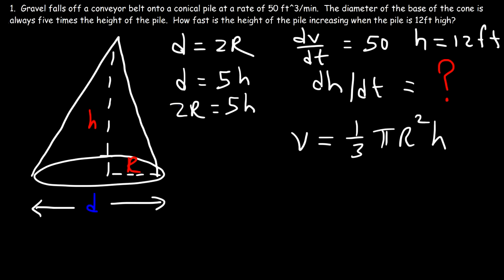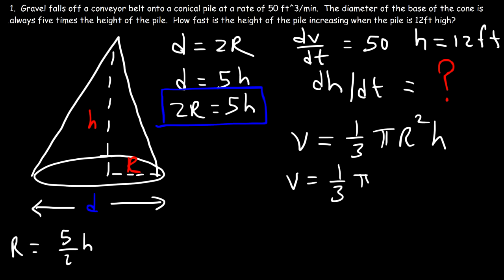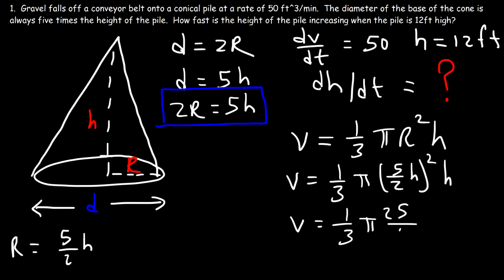We have an equation relating r with H. Solving for r by dividing both sides of 2r equals 5H by 2 gives r equals five-halves times H. Now let's replace r with (5/2)H in the volume formula. Five squared is 25, two squared is four, and H squared times H is H cubed, giving V equals 25π/12 times H cubed.